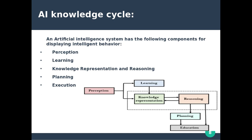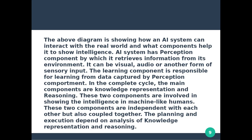The components of an AI system are: perception, learning, knowledge representation and reasoning, planning, and execution. The diagram shows how an AI system can interact with the real world and what components help it to show intelligence.